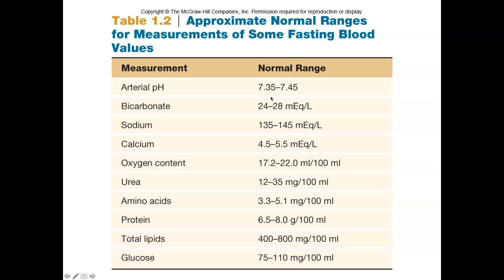So blood pH is 7.35 to 7.45, but oftentimes in books it will be presented as blood pH is 7.4. That 7.4 represents the set point for a particular physiological concept. Homeostasis really states that there will be fluctuations above and below that set point number, but it'll still be in the normal homeostatic range. This idea is known as dynamic constancy — the fluctuations above and below the set point number — and that's why you typically see ranges presented.